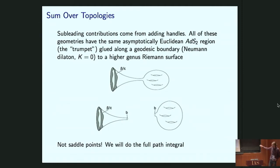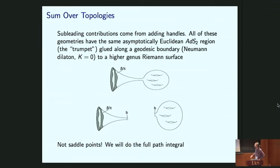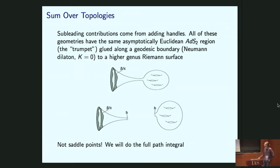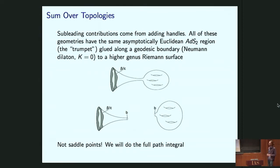Subleading contributions come from adding handles, and here we take advantage of the fact that everything in JT gravity is constant negative curvature. All manifolds with a single asymptotically AdS boundary have a simple form: you can cut these geometries along a circular geodesic into two pieces. One comment: a geodesic boundary in JT gravity has Neumann conditions for the dilaton. These two pieces — we call one the trumpet. We integrate over the boundary cutoff surface, the bulk moduli, and how the two regions are glued together — doing a full integral, not just a saddle-point approximation.